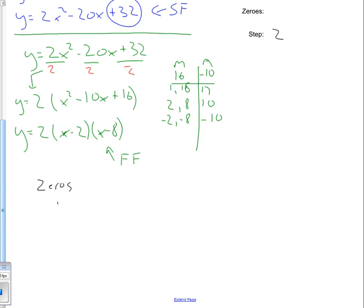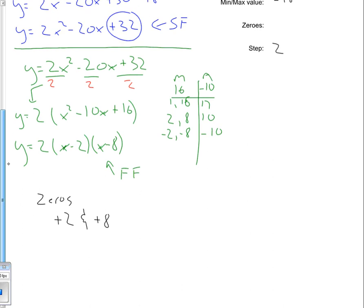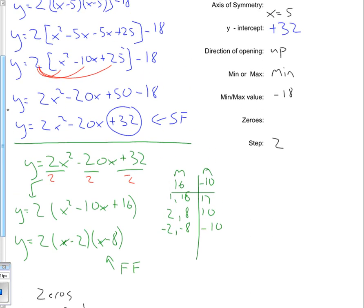So the zeros are actually positive 2 and positive 8. So if I go back, I can fill out the rest of this. So 2 and 8.